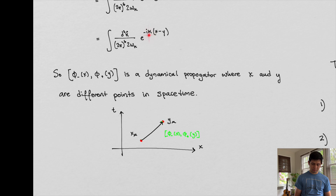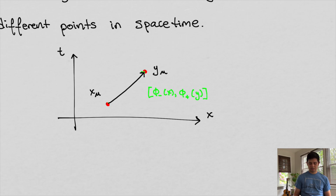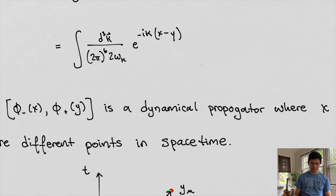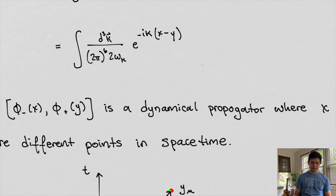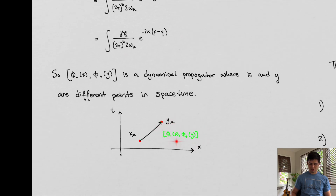The propagator that takes us from this point in space-time to this point in space-time is the commutation relationship between these two field components. It takes us from point x to point y. Initially we defined this as a propagator and said this is what it looked like, and now we're finding that it can be derived from this relationship right here.